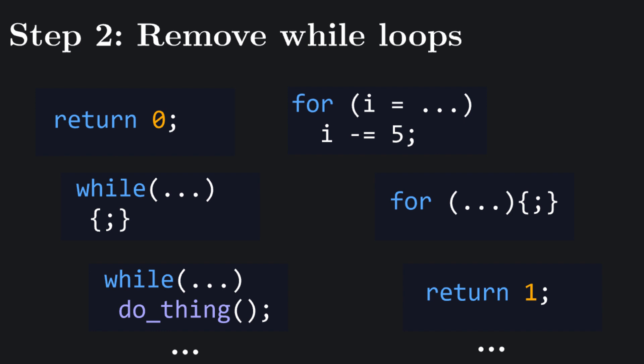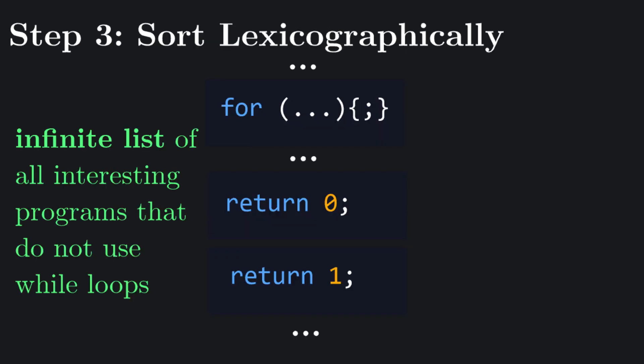Now, what we can do is take all possible interesting programs that take one integer input, remove the ones that contain while loops or mess with the index in for loops, because that's cheating, and order them lexicographically, that is, alphabetically, but also considering the symbols, for example using ASCII values for comparison. This way, every program is identified uniquely by its position in this list of programs.